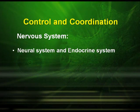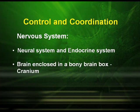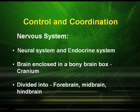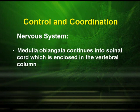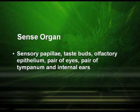Control and coordination in frog: the nervous system and endocrine system play a very important role. The brain is enclosed in a bony box called the cranium, which is divided into forebrain, midbrain and hindbrain. The medulla oblongata continues into the spinal cord, which is enclosed in the vertebral column. The sense organs are the sensory papillae, the taste buds, the olfactory epithelium, pair of eyes, pair of tympanum and the internal ears.